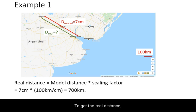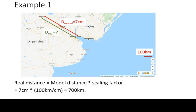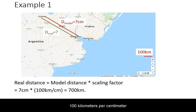To get the real distance, we use the formula: model distance times scaling factor. 7 cm times 100 km per cm is 700 km.